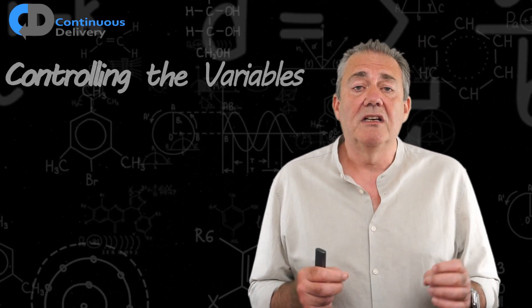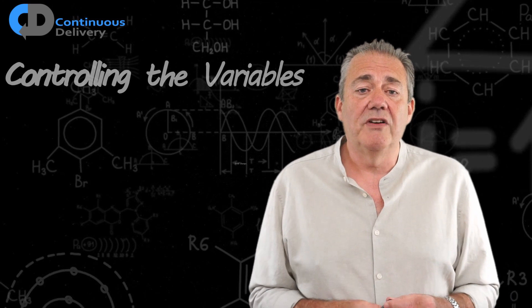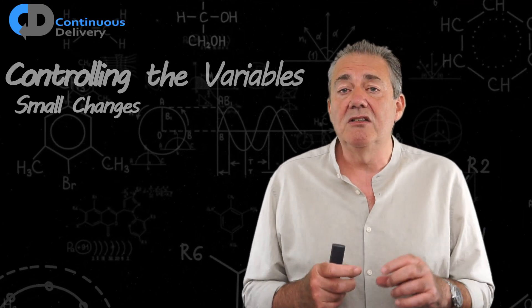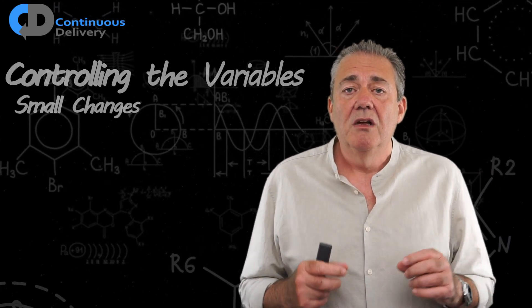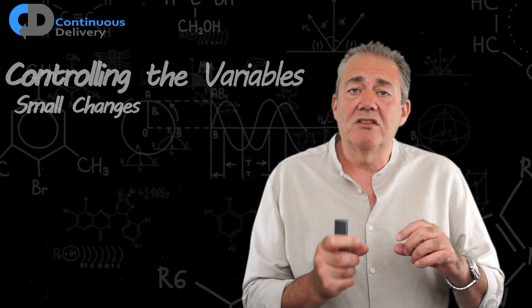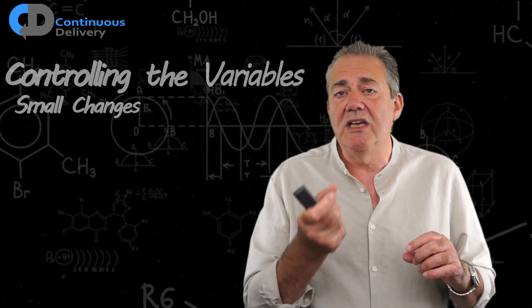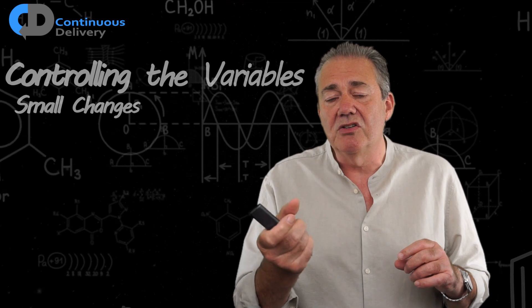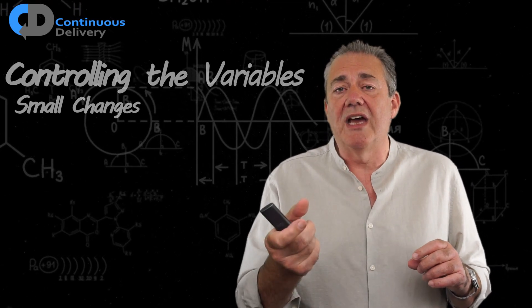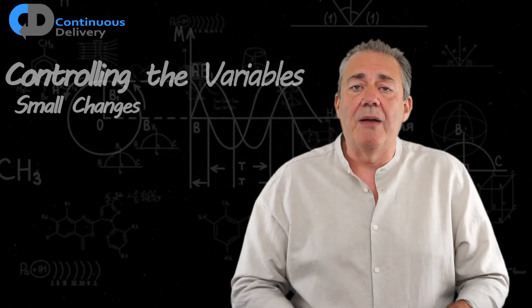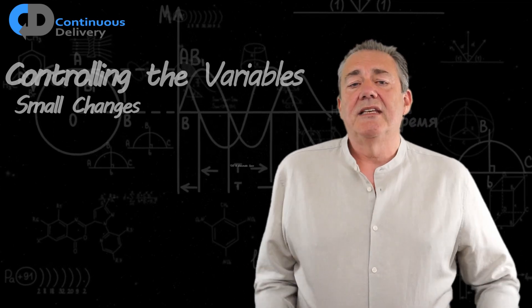The first thing to consider when we're trying to control the variables is to make changes in small steps. We want to make small changes so we can determine the impact of each tiny change and not confuse that impact with lots of other changes happening at the same time.